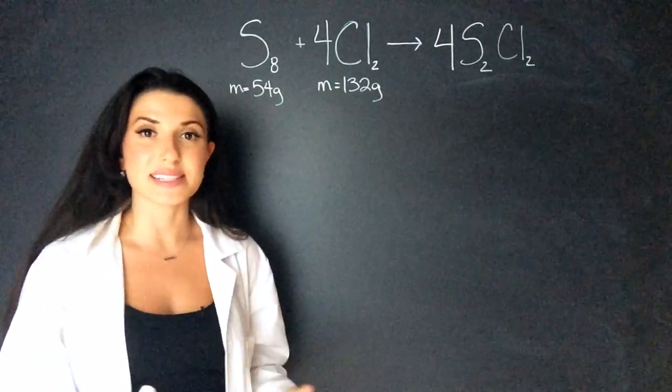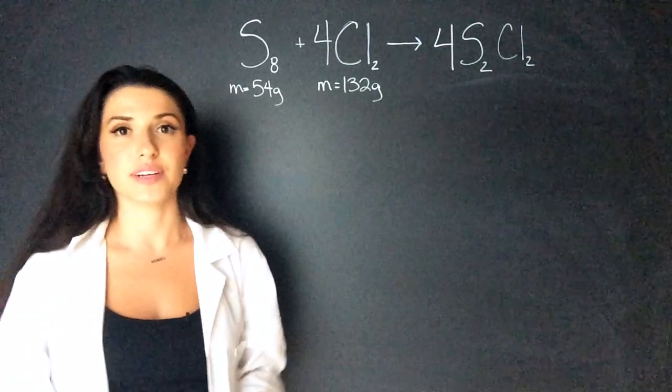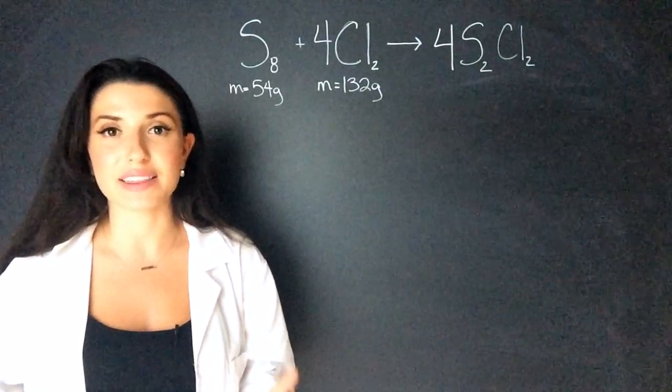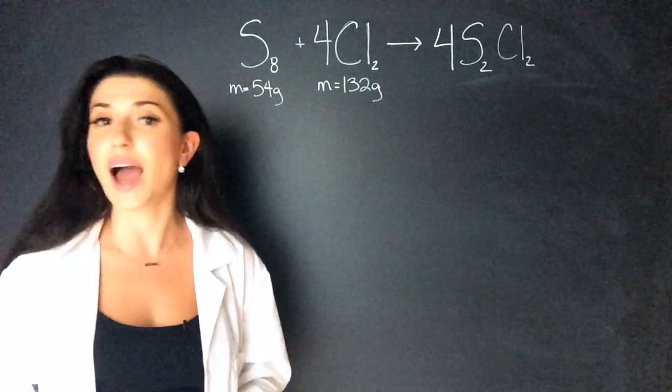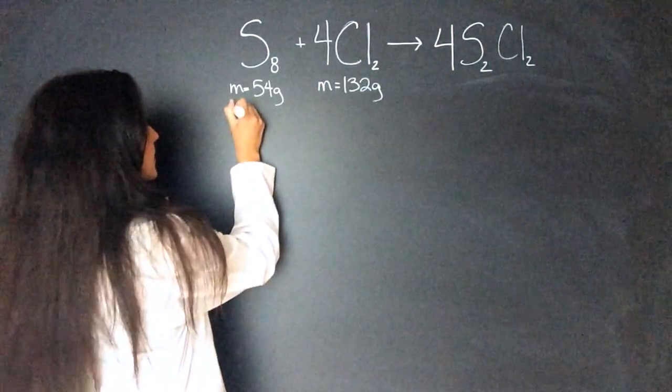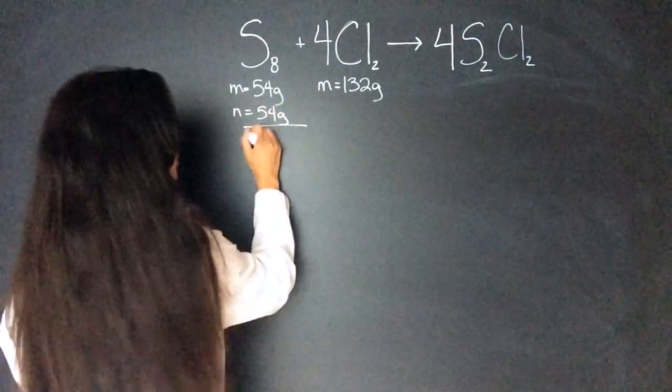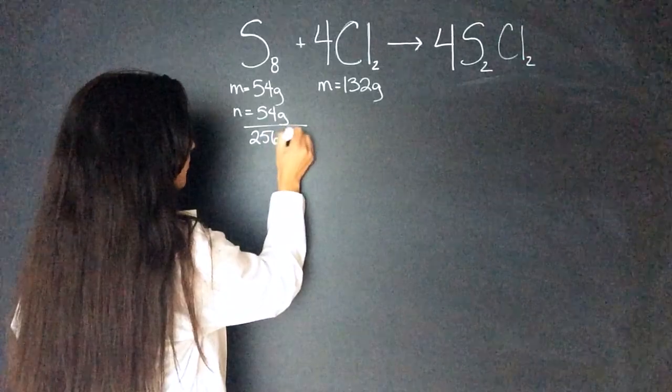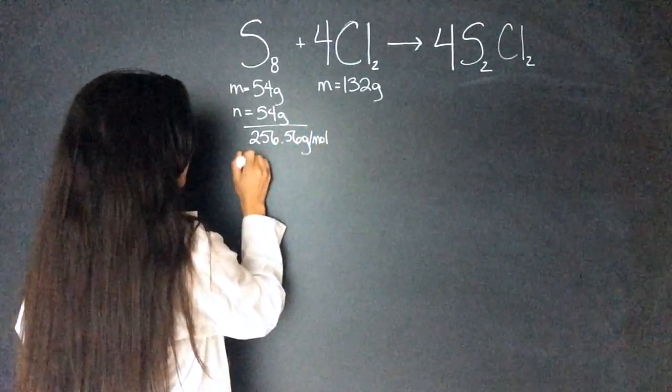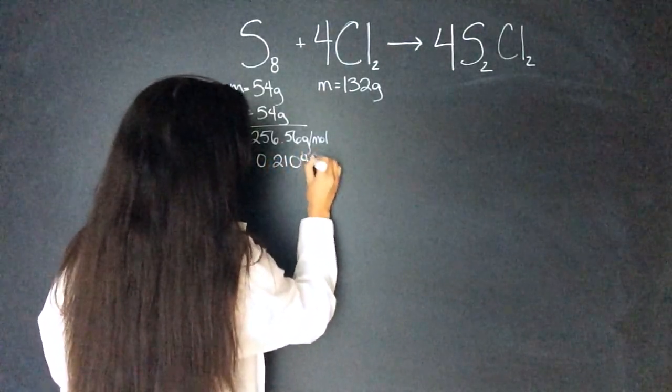The question gave us the mass of the reactants. We have 54 grams and 132 grams. We can't do anything with the mass, so we have to find the moles. And to find moles, I'm going to use the mass over molar mass equation. So these moles will equal 54 grams divided by 256.56 grams per mole. That will give me 0.21048 mole.